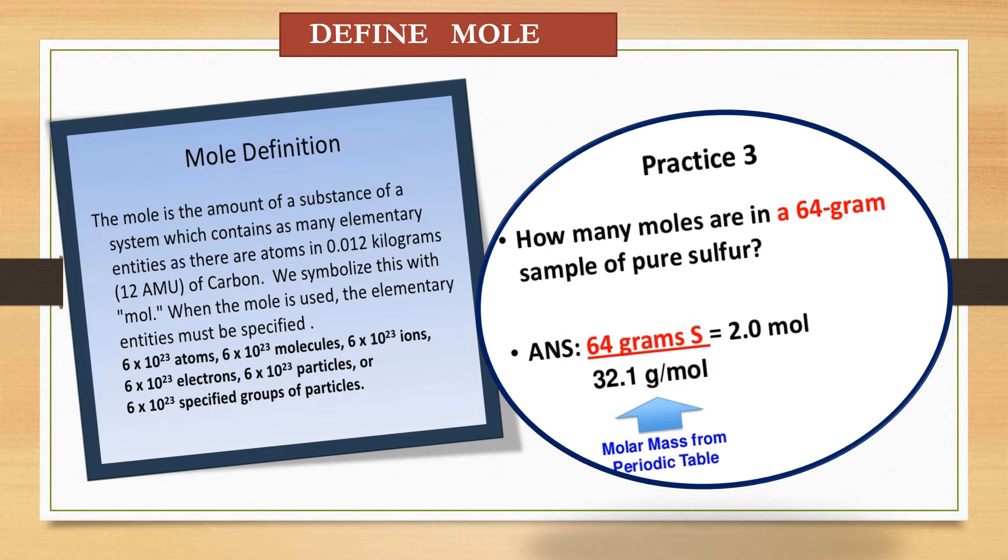What is mole? The mole is the amount of a substance of a system which contains as many elementary entities as there are atoms in 0.012 kilograms or 12 AMU, that means atomic mass unit, of carbon. We symbolize this with mole. When the mole is used, the elementary entities must be specified like this: 6 into 10 to the power 23 atoms, 6 into 10 to the power 23 molecules, 6 into 10 to the power 23 ions.